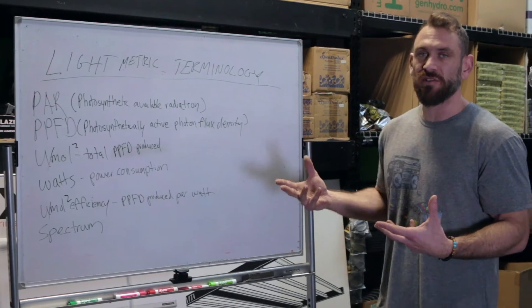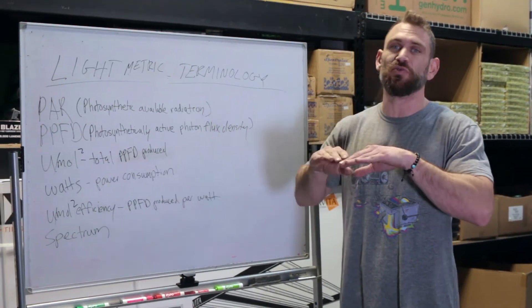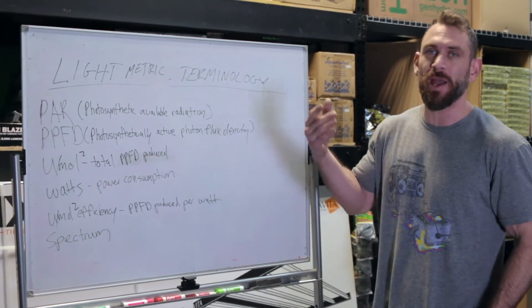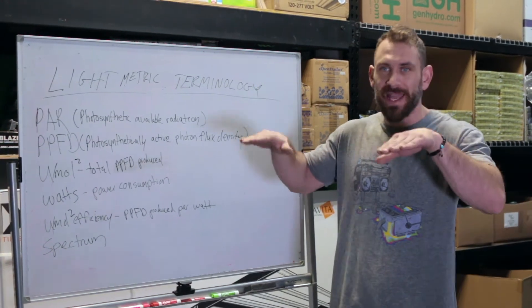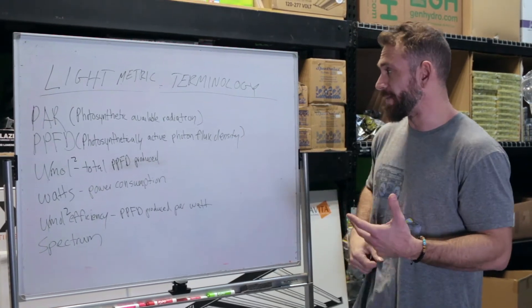But all this is really referring to is the amount of actual light that is usable by the plant that's reaching the canopy. So it's the amount of photons that's actually landing on the leaf surface. This is what you want to pay closest attention to when you're purchasing a light.